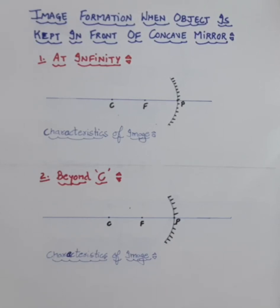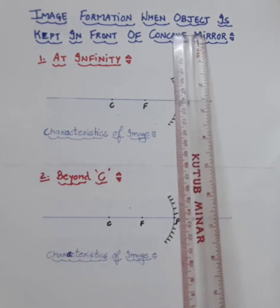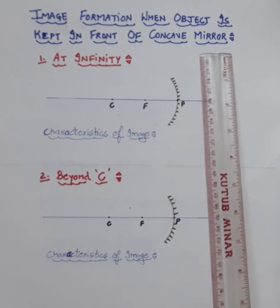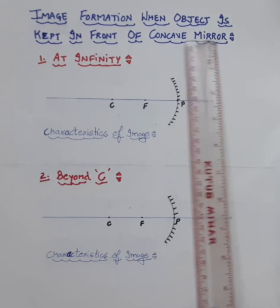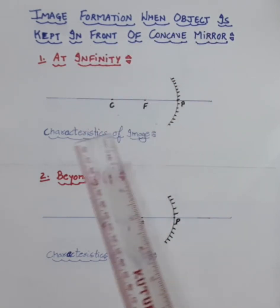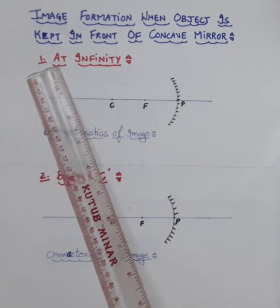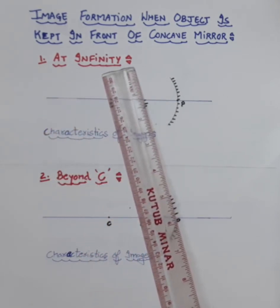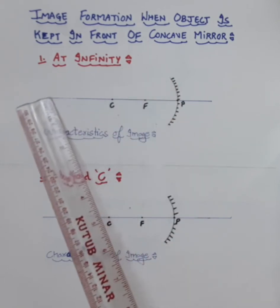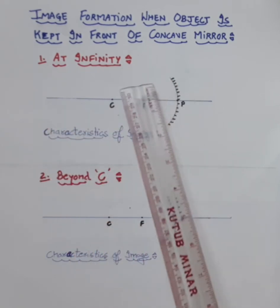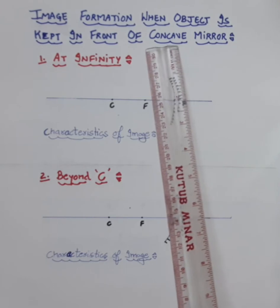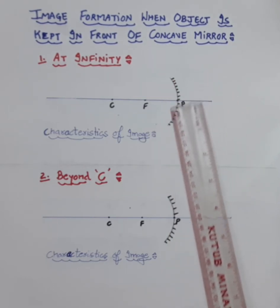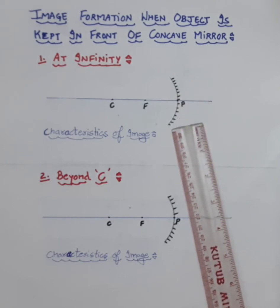Welcome back, students. This video explains how to draw ray diagrams when an object is kept in front of a concave mirror. A concave mirror is a converging mirror. We will first draw the principal axis, then use a compass to draw the curved mirror — the inner side is reflecting and the outer side is polished.